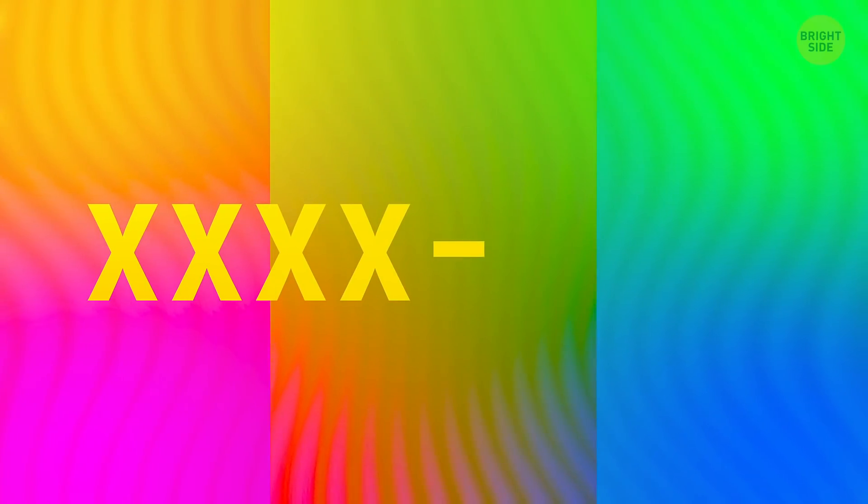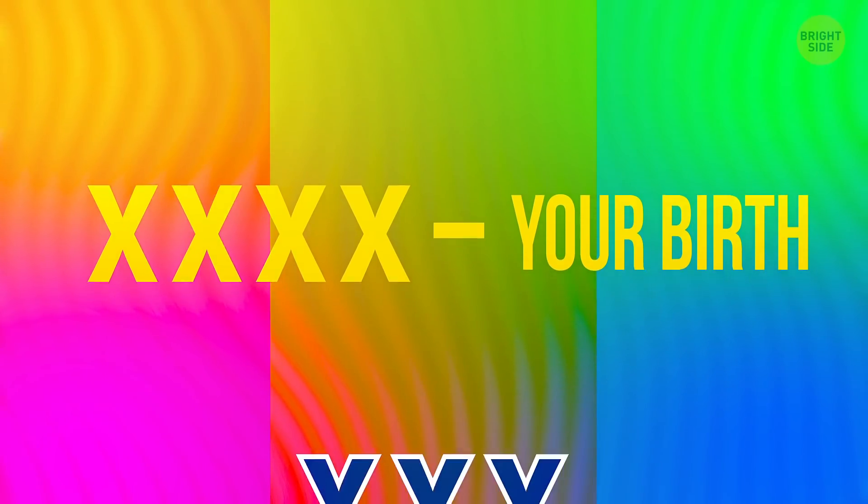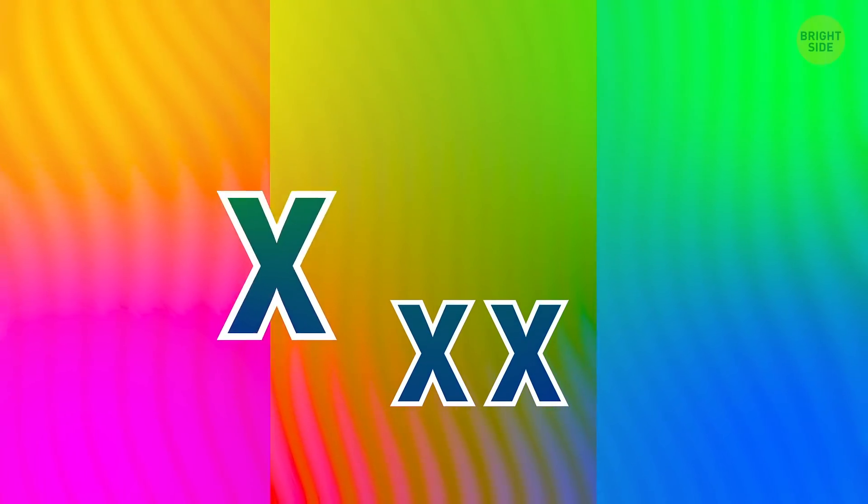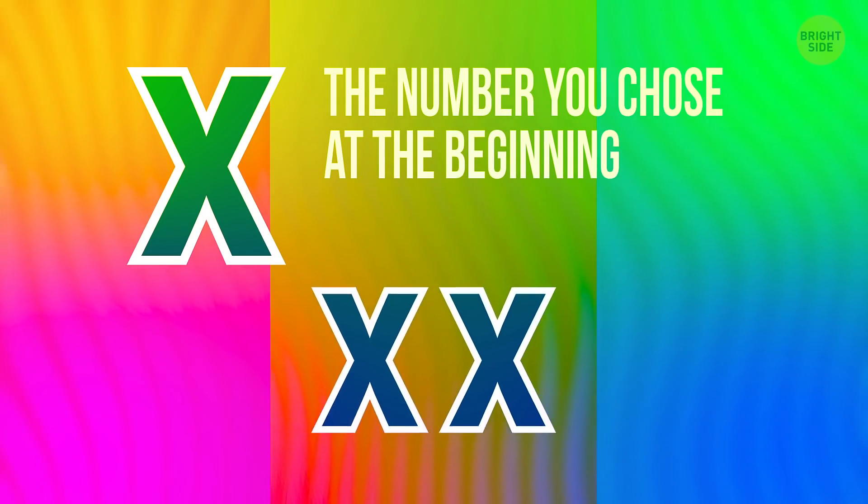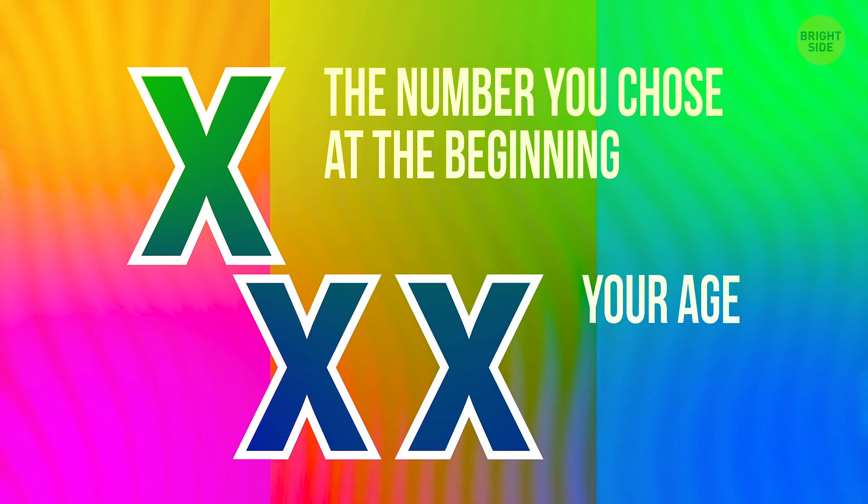And the last task. You need to subtract the year of your birth from your final result. After you've done this, you're supposed to get a 3-digit number. The first digit is the number you chose at the beginning. And the following 2 digits are your age. If you haven't made any mistakes in your calculations, you'll have the right answer.